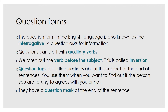Question forms. The question form in the English language is also known as the interrogative. A question asks for information, or interrogates. Questions can start with auxiliary verbs. We often put the verb before the subject — this is called inversion. Question tags are little questions at the end of sentences, used when you want to find out if the person you are talking to agrees with you or not. They have a question mark at the end of the sentence.